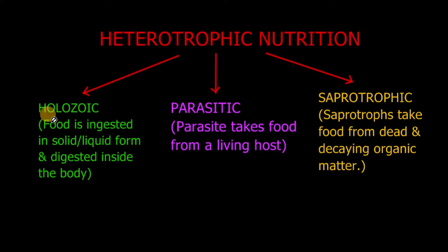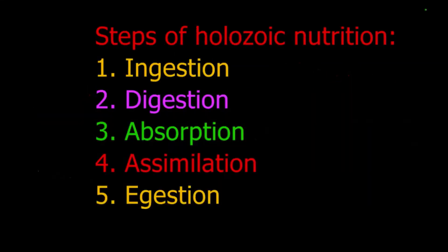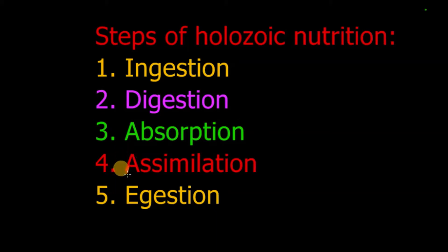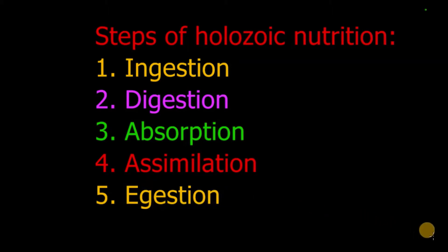Now we are going to discuss holozoic nutrition in detail. What are the steps of holozoic nutrition? The first step is ingestion — intake of food through the mouth. The second step is digestion — complex molecules of food are broken down into simpler ones. The third step is absorption — digested food molecules are absorbed into the bloodstream. After absorption, these food molecules are used to get energy and for growth or repair of the body, which is known as assimilation. And undigested waste is removed out from the body, which is known as ejection.